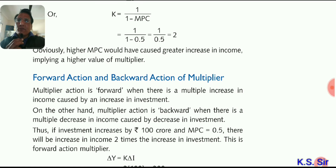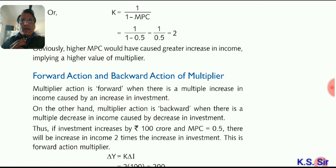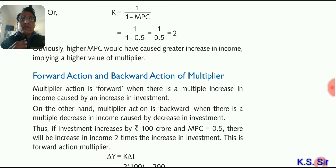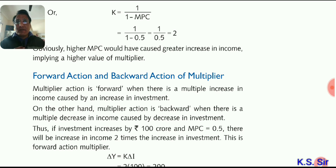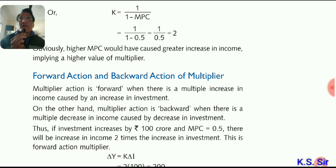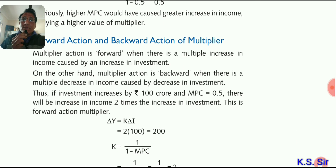Forward and backward action of the multiplier. When there is a multiple increase in income caused by an increase in investment, it is called the forward action of the multiplier — the economy moves forward. On the other hand, when there is a multiple decrease in income caused by a decrease in investment — as happened during COVID — it is called the backward action of the multiplier. Forward and backward action are both commonly asked topics.